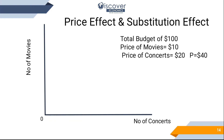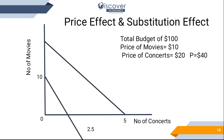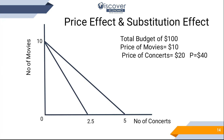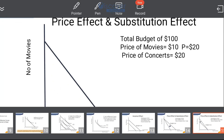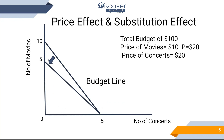The price effect tells us that if the price of one commodity increases or decreases, it will shift the indifference curve either forward or backward. For example, if the price of concerts increases, we were previously enjoying 5 concerts but now only enjoy 2.5 concerts. Similarly, if the price of movies increases from $10 to $20, we were enjoying 10 movies but now only 5 movies.